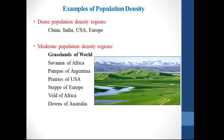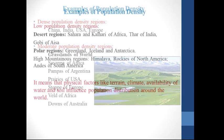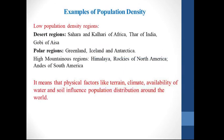Here are some examples of population density. Dense population density regions are China, India, USA, and Europe. Moderate population density regions are mostly the grasslands of the world — so prairies of the USA, velds of Africa, downs of Australia, and savannas of Africa. And low population density regions are probably desert regions and polar regions. So we can conclude that physical factors like terrain, climate, availability of water, and soil influence the population distribution around the world.